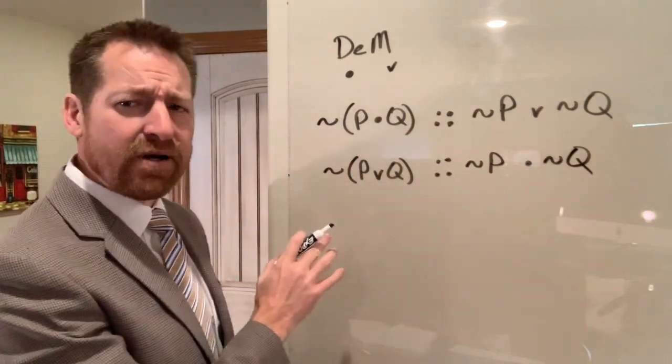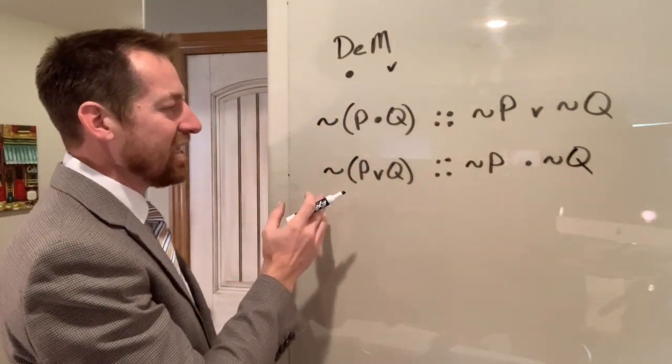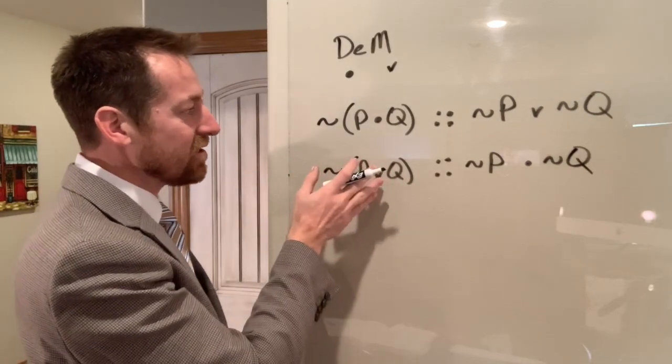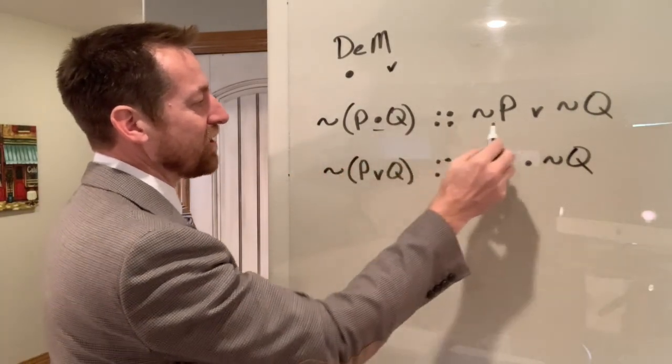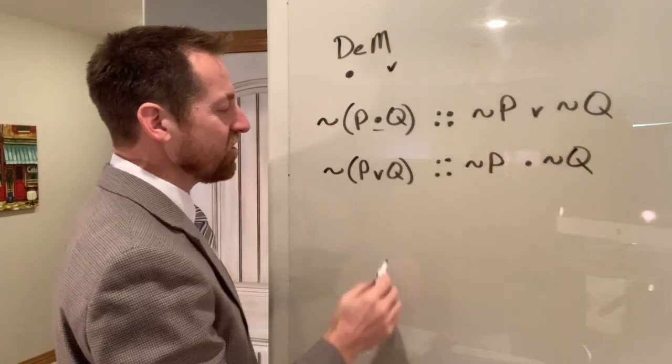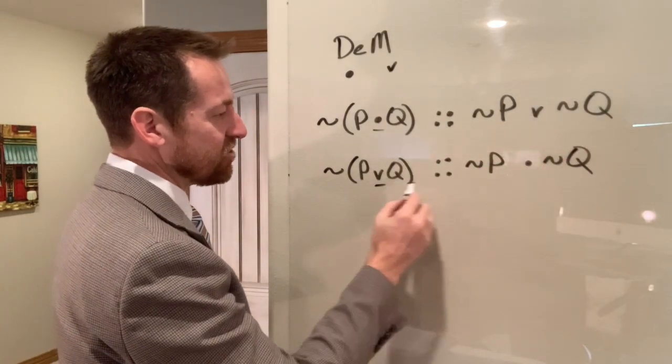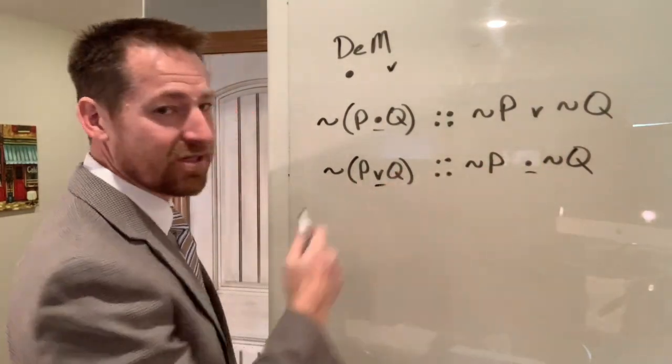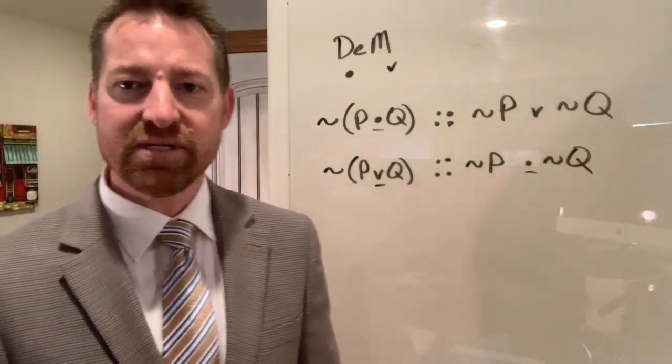So notice the way this functions is that whenever you have a negation on the outside, you could sort of run it into the parentheses and you flip the operation from either a conjunction to a disjunction or you flip it from a disjunction to a conjunction, essentially distributing the negation into it.